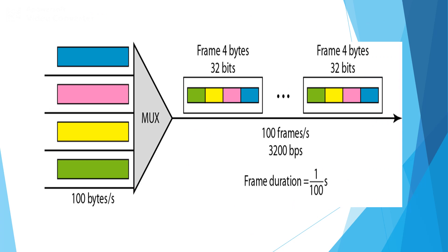The multiplexer shown in the figure has each frame consisting of 4 bytes of data, where 4 bytes = 4 × 8 = 32 bits. So the frame size is 32 bits or 4 bytes. The frame rate is 100 frames per second, and since 100 frames can be transmitted per second, the duration for a single frame is 1/100 second. The bit rate is 3200 bits per second.